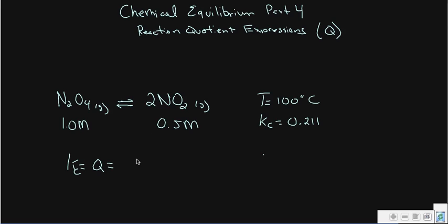So let's just put those in there. Our products are NO2, so we're going to have 0.5 squared divided by our reactants, which gives us 0.5 squared divided by 1. Let me calculate that real quick. That's an easy one, I don't even have to use a calculator: 0.25.